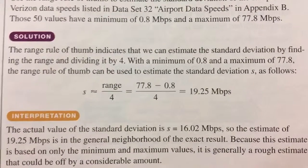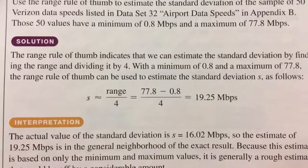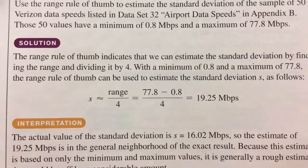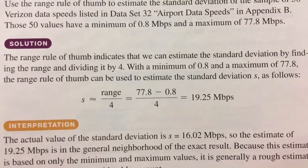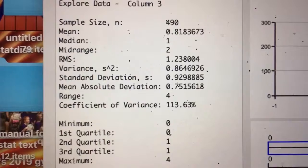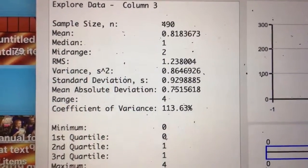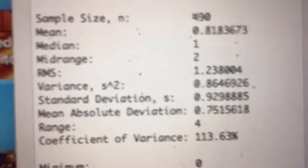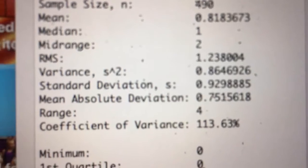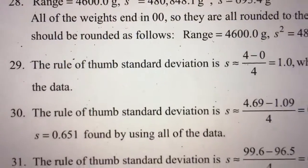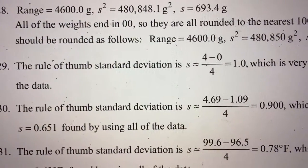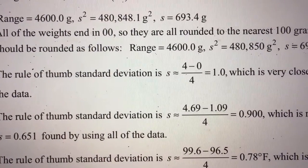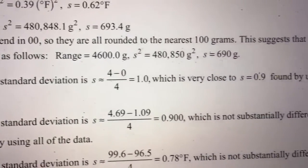The range rule of thumb for estimating the standard deviation — found on page 102 under example 5 — says to take the range and divide by 4. In our problem, the range is 4, so we divide by 4 and get 1, which is very close to the actual standard deviation of 0.9298885.